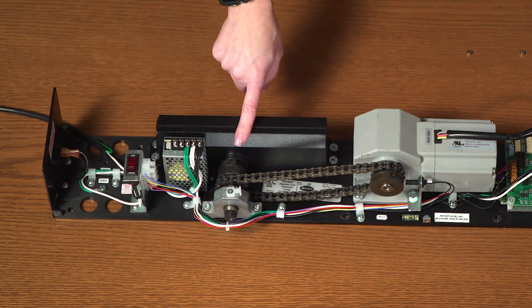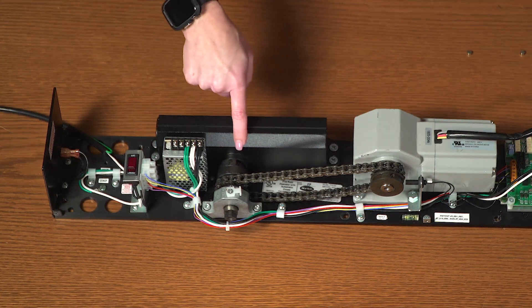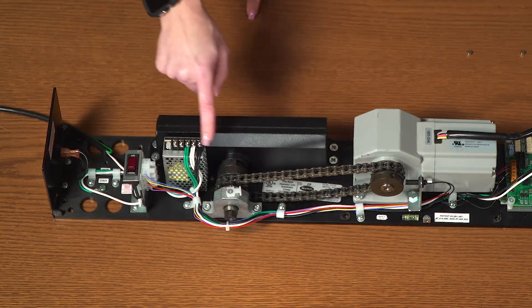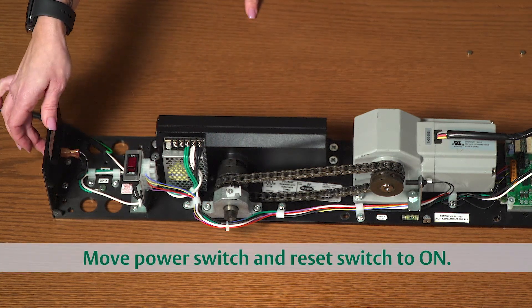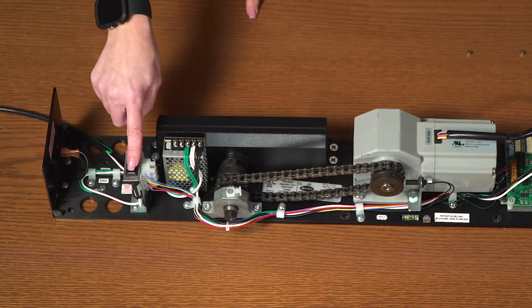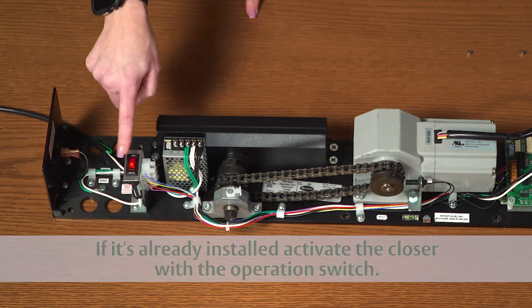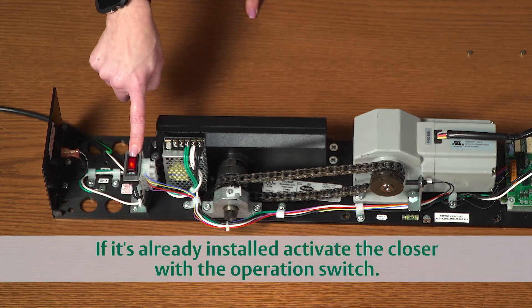At this point, you'll need to activate the closer and have the pinion turn one full rotation. Flip on the power at the end cap and on the reset switch. If it's already installed, press the operation switch to operate the closer.